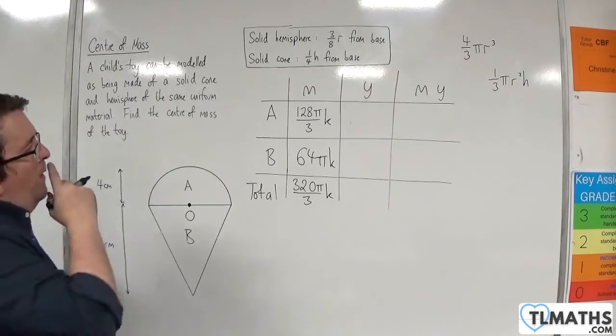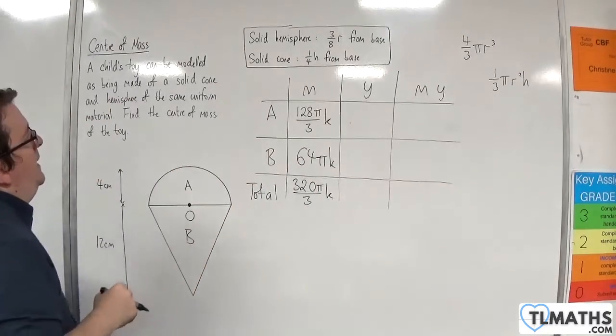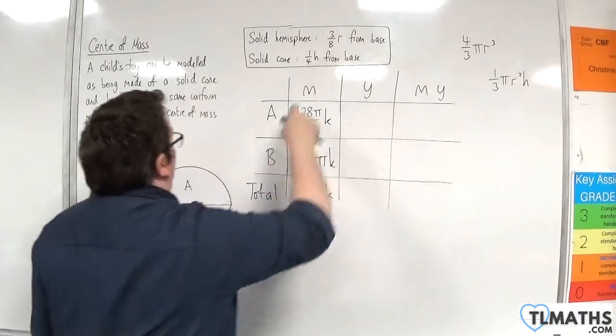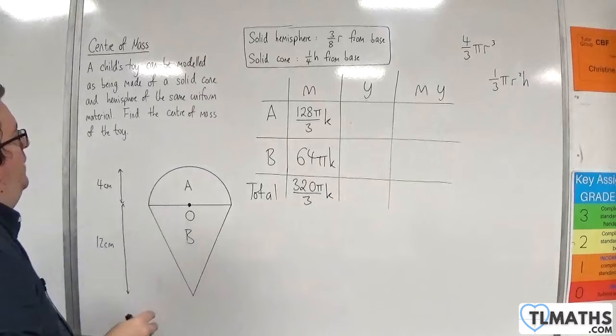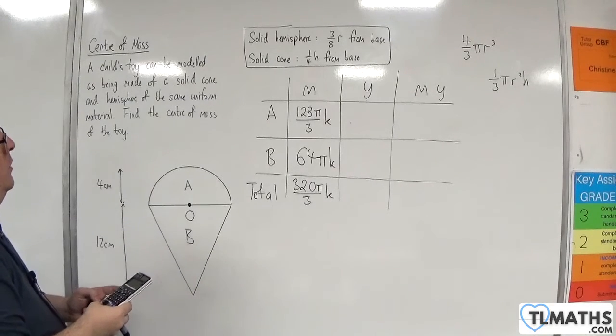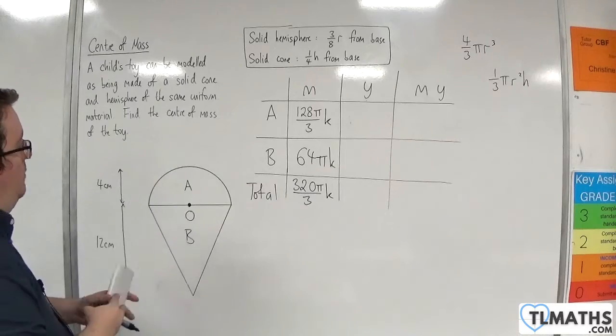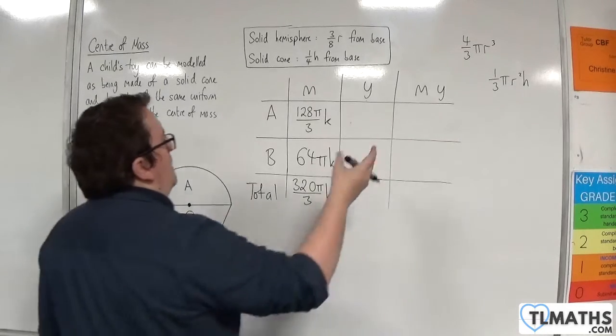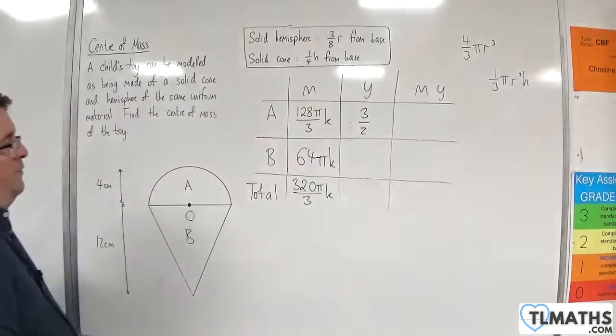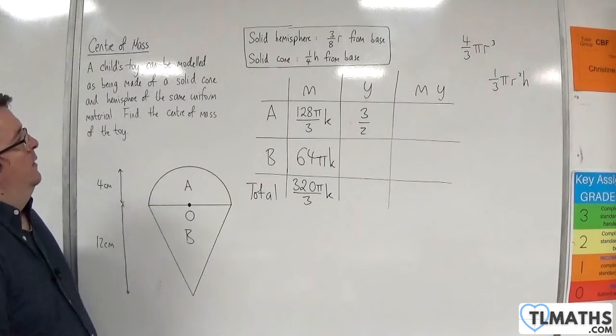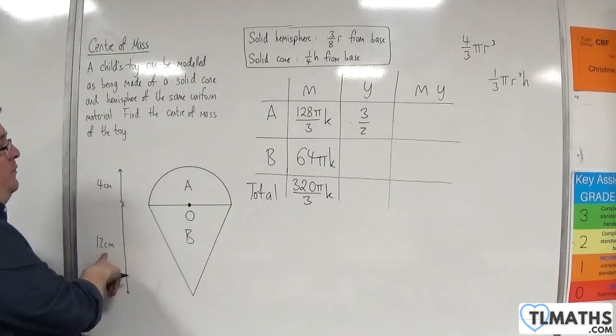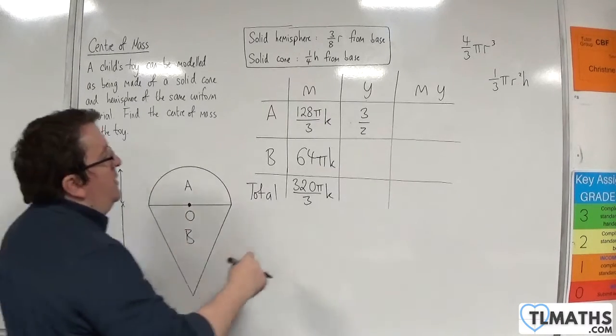Now, the Y-coordinate of the center of mass for A. So for a solid hemisphere, it's 3 eighths R from the base. So we've got 3 eighths times by 4, so 3 halves. I'll put it as 3 halves. Now, for the cone, it's a quarter H from the base. So a quarter of 12 is 3, so it's at minus 3.